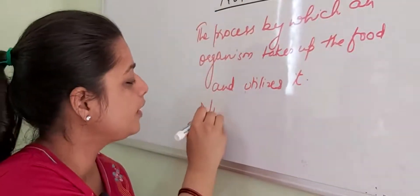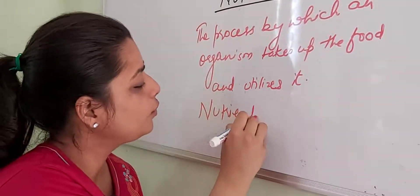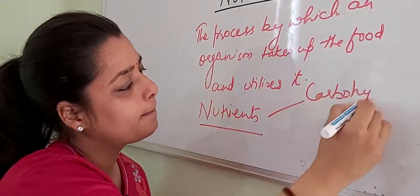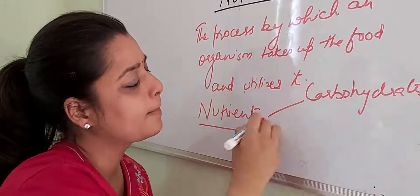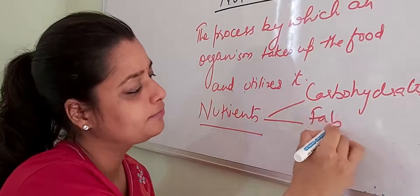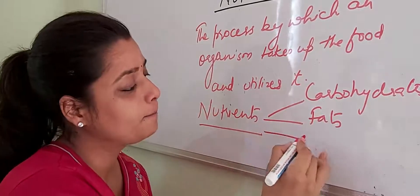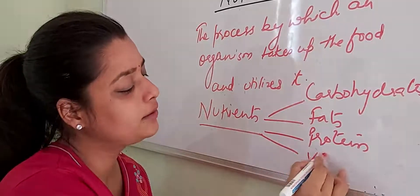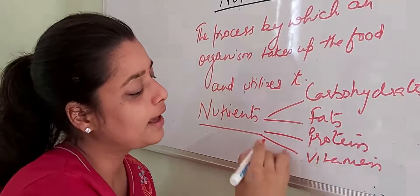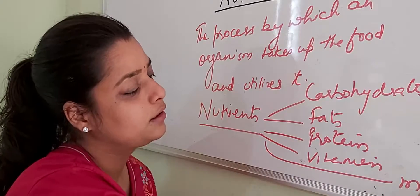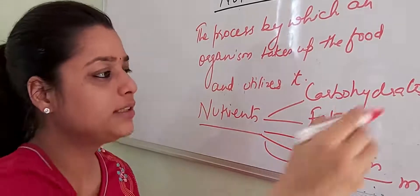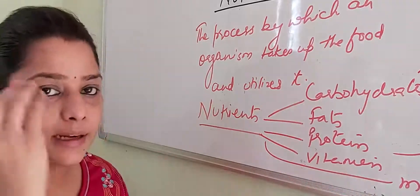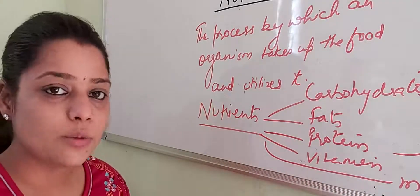In nutrition, we get nutrients. What are the nutrients? Carbohydrates, fats, and proteins are major nutrients. Then vitamins and minerals. These are the ones which are major - we need them a lot - and these are the ones we need in less quantity.